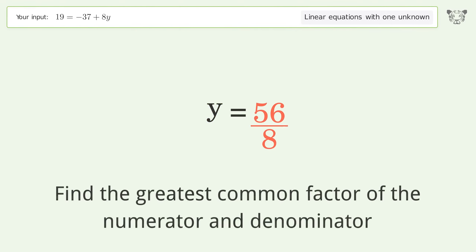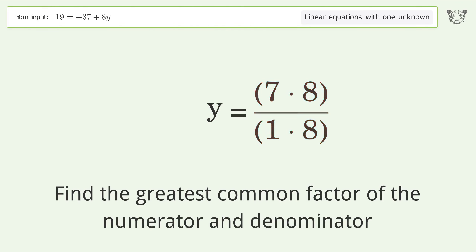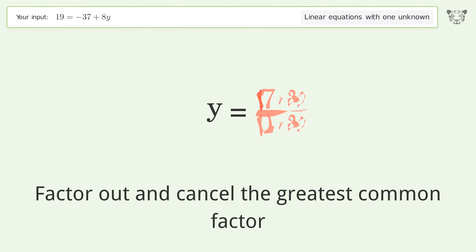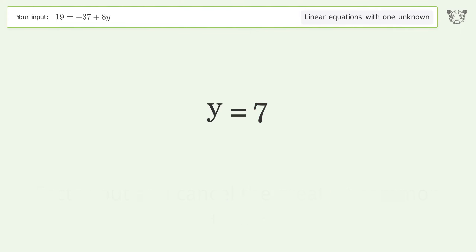Find the greatest common factor of the numerator and denominator. Factor out and cancel the greatest common factor. And so the final result is y equals 7.